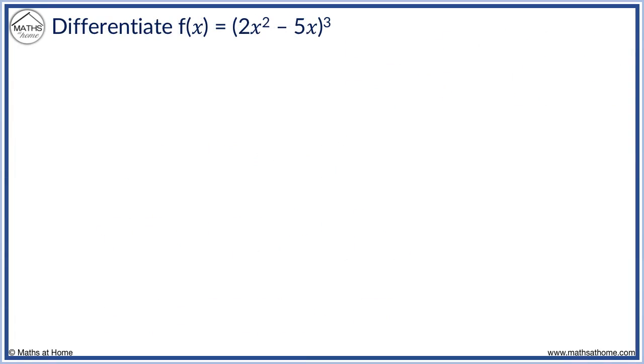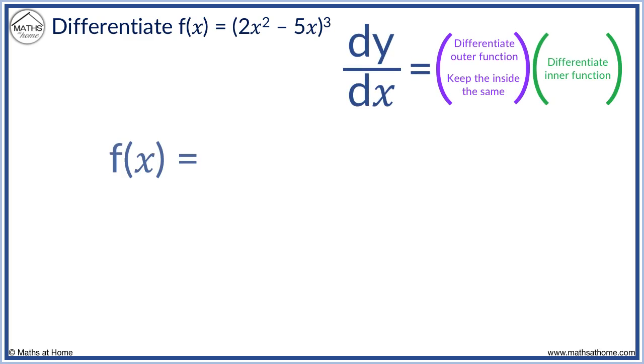Here is another example. Differentiate (2x² - 5x)³ using the chain rule. We write the function as an inner function which is the 2x² - 5x inside the brackets. We have an outer function which is raising the 2x² - 5x to the power of 3.